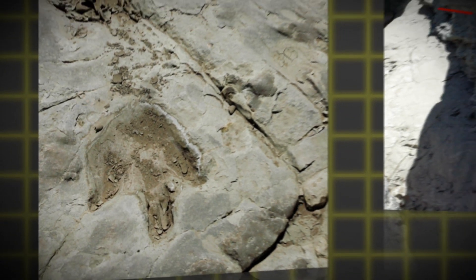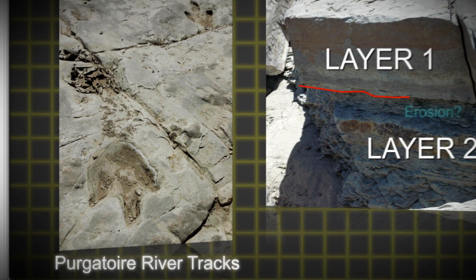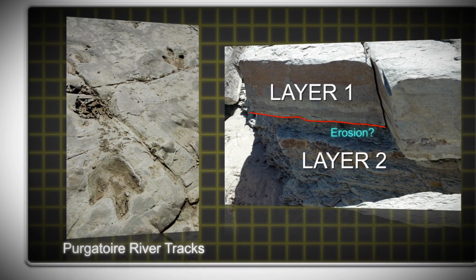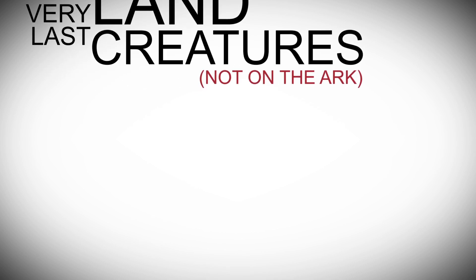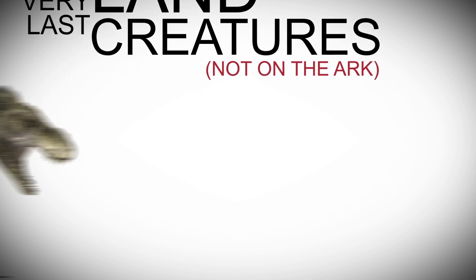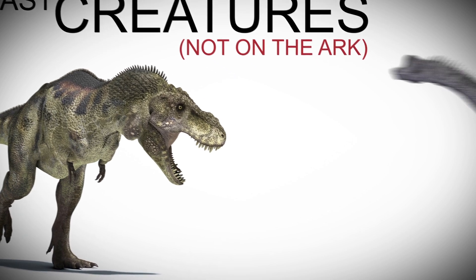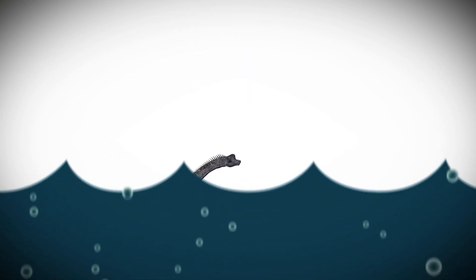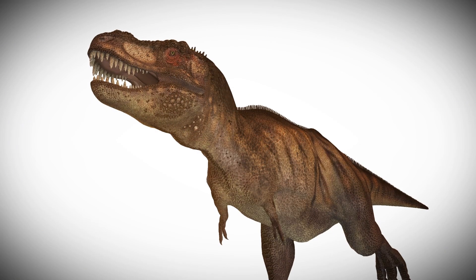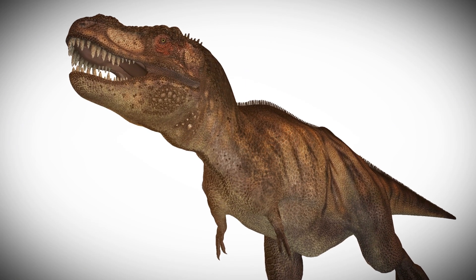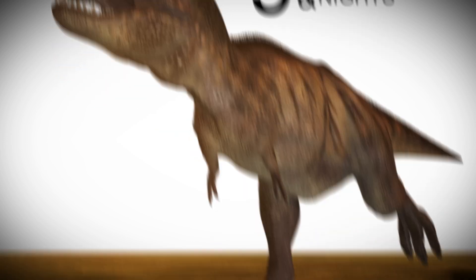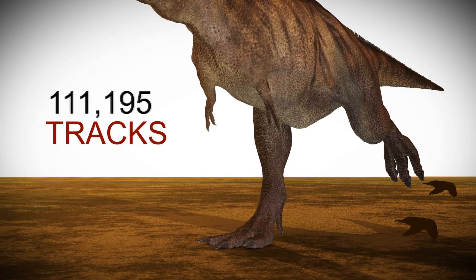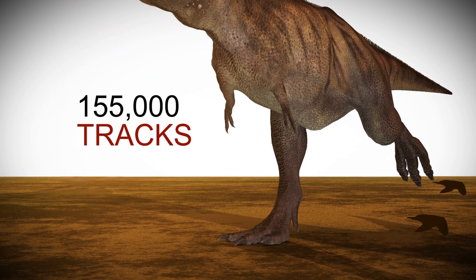That might explain why dinosaur tracks are on mudstone, but without signs of erosion to the layers that hold dinosaur tracks. The very last land creatures to breathe air that were not on the ark were probably adult three-toed dinosaurs and a few sauropods. Most dino babies would have been overwhelmed by the flood early on. A single exhausted dinosaur walking for five days and nights could stomp around enough to form 155,000 tracks.